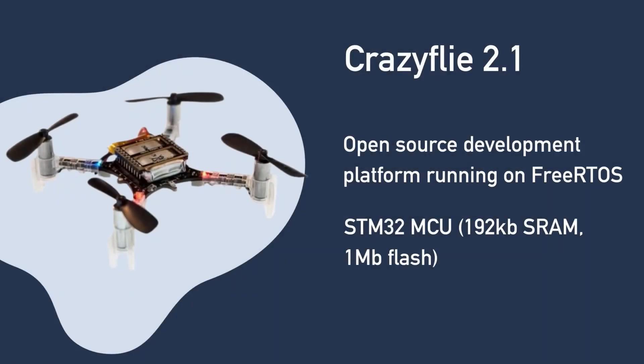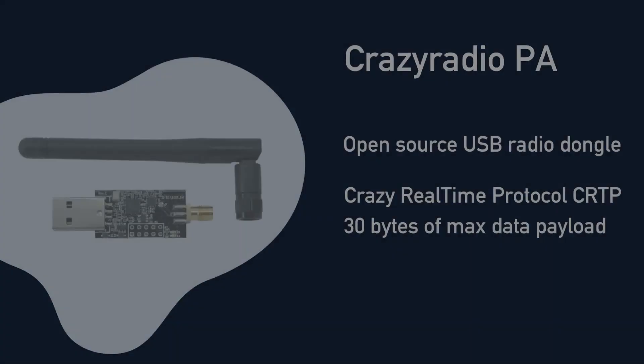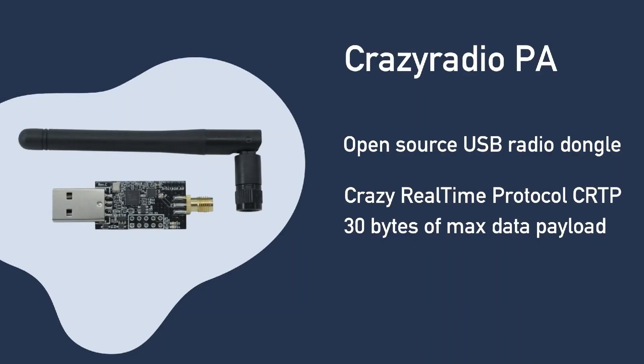The main participant in this demo is the CrazyFly 2.1, an open source development platform running on FreeRTOS which is already supported by MicroROS build systems. The main application runs on a STM32 MCU. For the transport layer it will operate with the CrazyRadio PA, used to communicate with the drone. This open source USB radio dongle is capable of handling distances up to 1km.